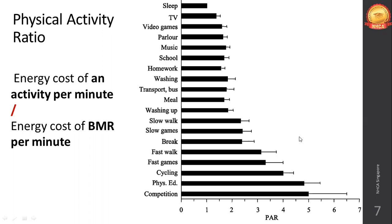Don't worry too much about calculating physical activity ratios yourself — researchers have done extensive testing, mostly on athletes, to find out how much energy is lost when you walk, brisk walk, do lunges, or push-ups. When you search online for how many calories a specific exercise burns, you get an answer because researchers put athletes on such tests and noted the heat energy produced, which tells us how many calories are being burned.